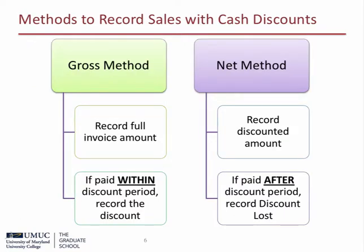Sales can be recorded using either the gross or net method. The gross method assumes the buyer will not pay the invoice within the discount period, and therefore is not entitled to the discount. The buyer records the purchases and associated accounts payable at the full invoice amount. If the buyer does pay within the discount period, then another journal entry is made to account for the discount taken. Under the net method, purchases are recorded at the discounted or lower amount. If the buyer misses the due date to take the discount, another journal entry is made to account for the discounts lost.